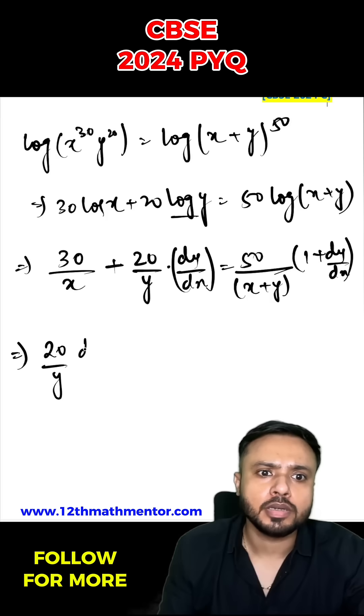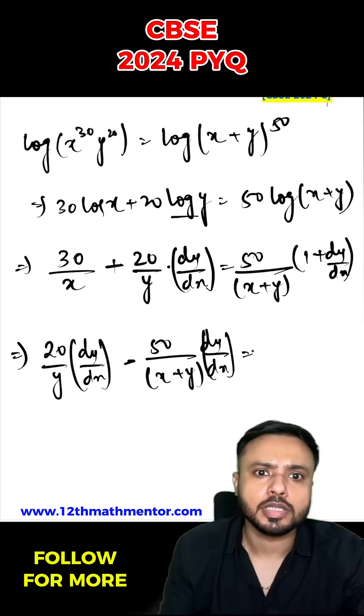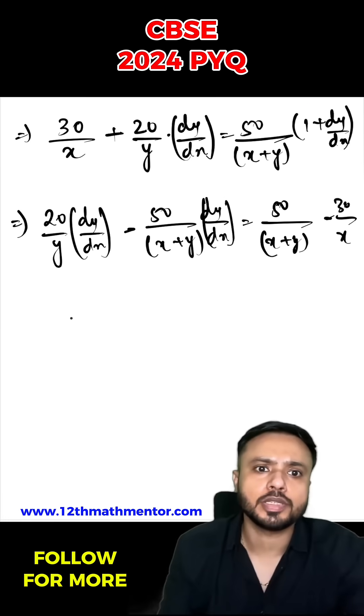So I can write it as 20 upon y dy upon dx minus 50 upon x plus y dy by dx is equal to 50 upon x plus y minus 30 upon x. So I've shifted dy upon dx terms to one side.